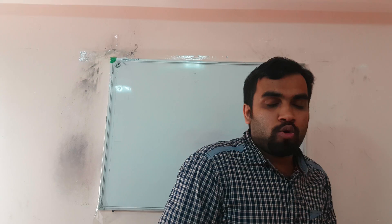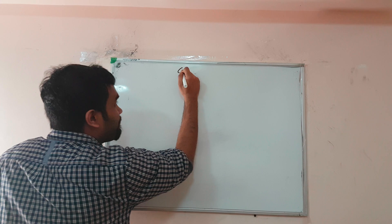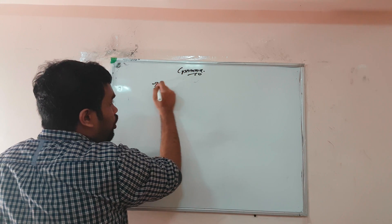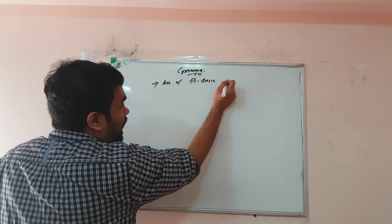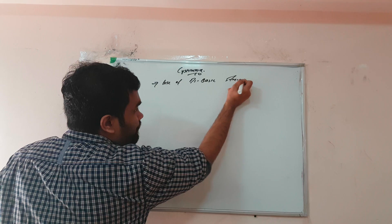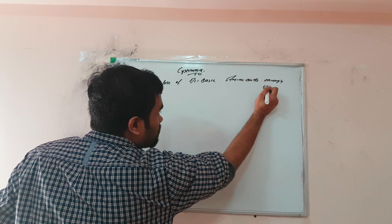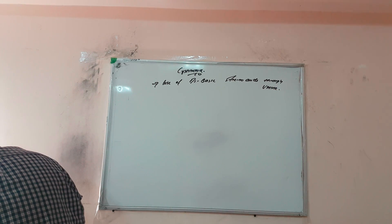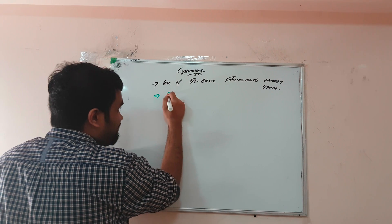Next we are going to discuss a disease condition called cystinuria. Cystinuria is the loss of dibasic amino acids through the urine. The gene defect also affects dibasic amino acid transport in the kidney.